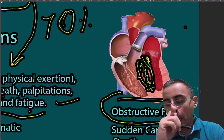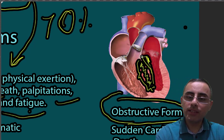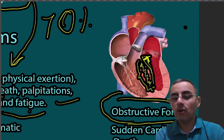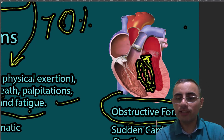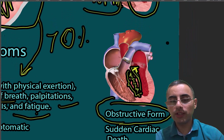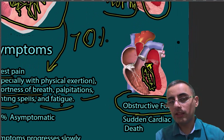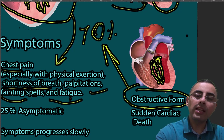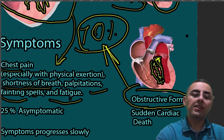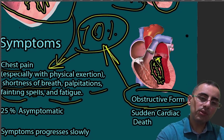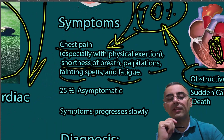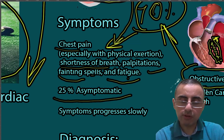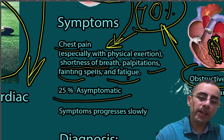Because it obstructs blood flow, the obstructive form can cause fainting and sudden cardiac death — that's why it's so important. Roughly, the obstructive form is represented in 70 percent of cases, which is why 70 percent of patients have symptoms. The remaining approximately 25 percent are asymptomatic.